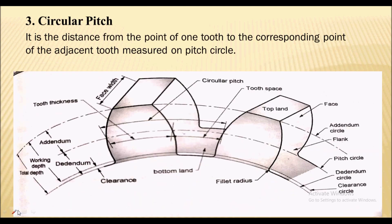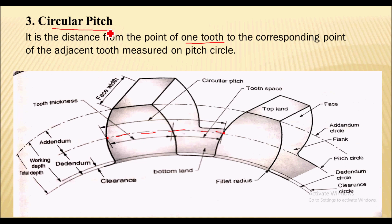Next term is the circular pitch. Circular pitch is the distance from a point on one tooth to the corresponding point of the adjacent tooth, measured on a pitch circle. Two gears will mesh correctly if they have the same circular pitch.